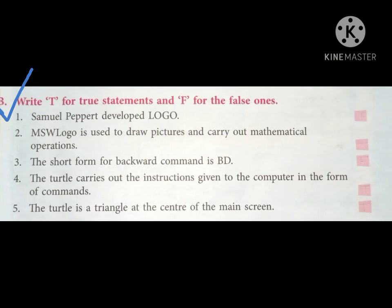Question B: Write T for the true statements and F for the false ones. Number one: Samuel Peppert developed Logo. Is it true? No, because the correct name was Seymour Papert, not Samuel Peppert, so we will write F on the box. Number two: MSW Logo is used to draw pictures and carry out mathematical operations. Yes, it is true. We will write T on the box.